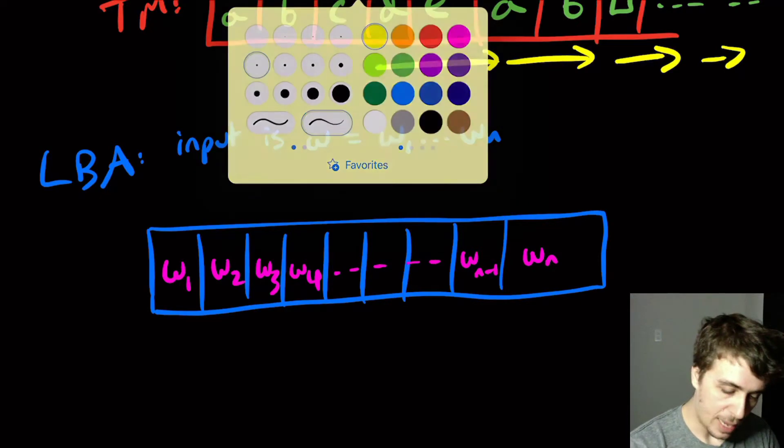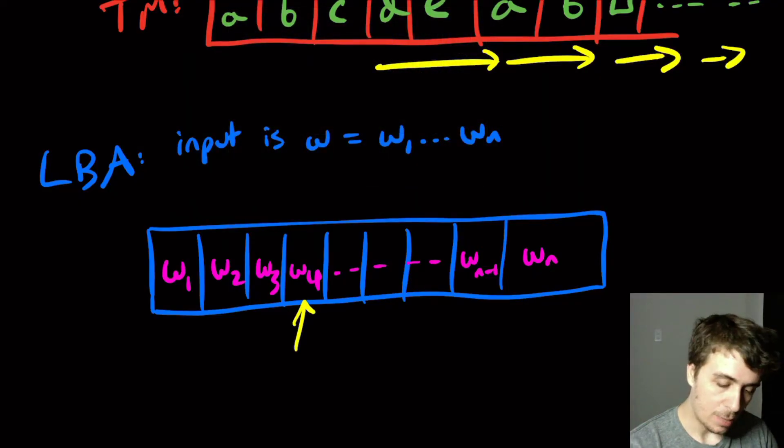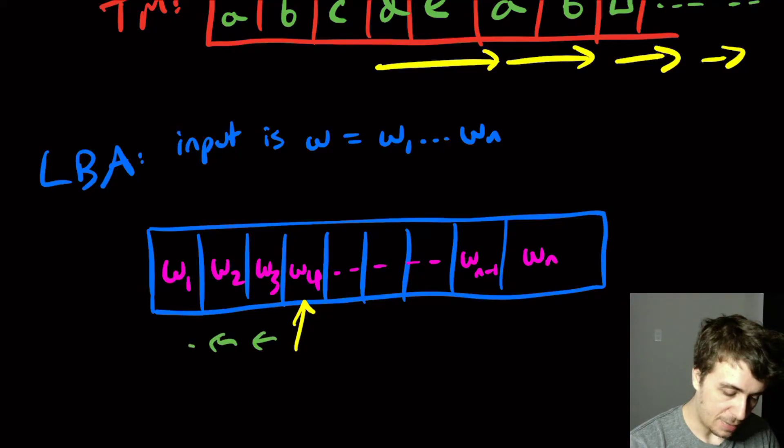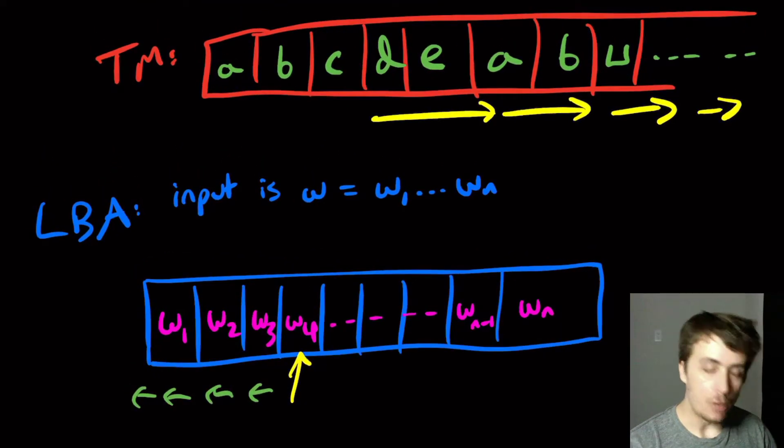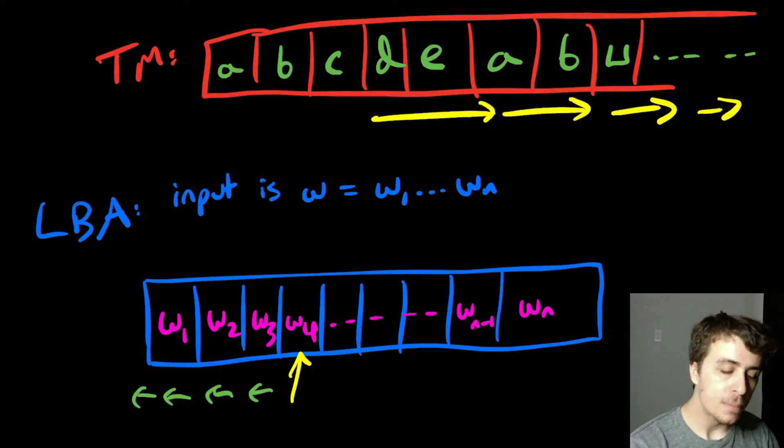Suppose that we have the tape head right here and we decide okay, we're going to move the tape head left, left, left and then try to move left again. But in the original scenario for Turing machines, and this is the same thing here too, although it won't matter...